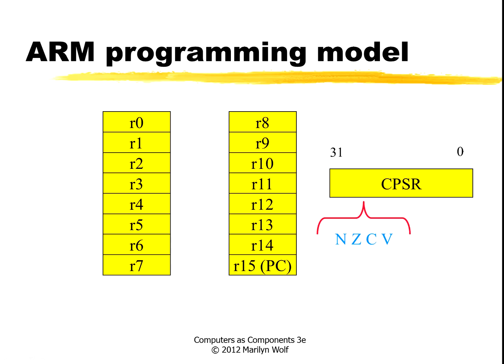The current program status register holds several different bits. The ones we're most concerned with are the bits that relate to the results of arithmetic operations: negative, zero, carry, and overflow — the NZCV bits.